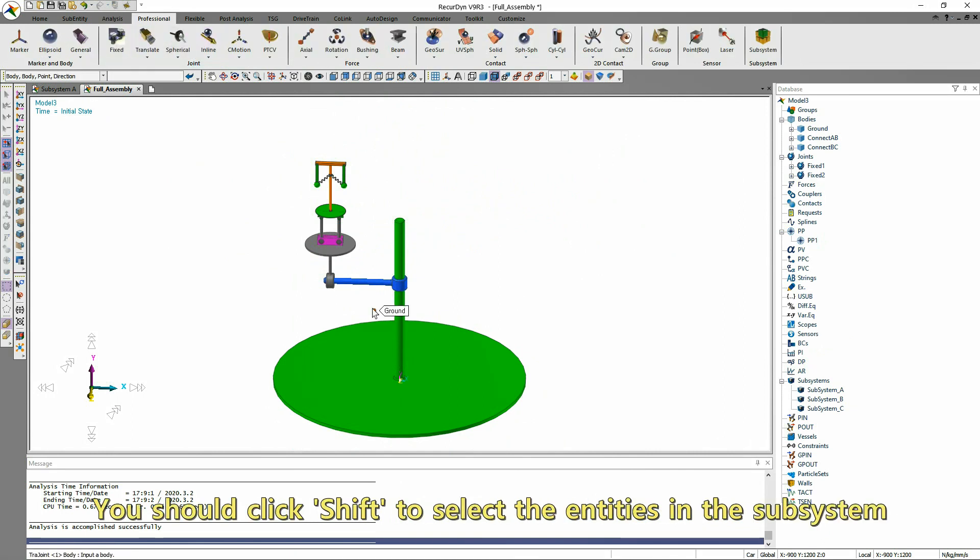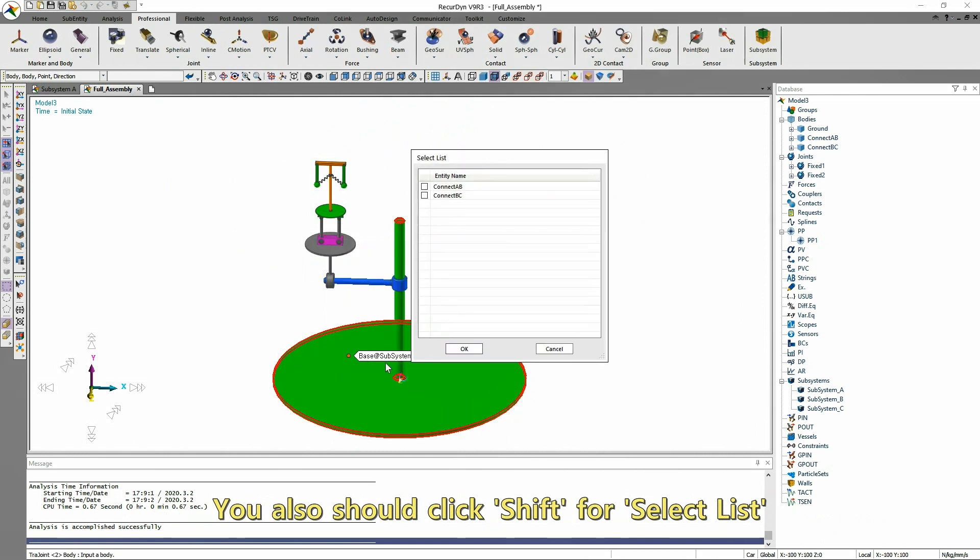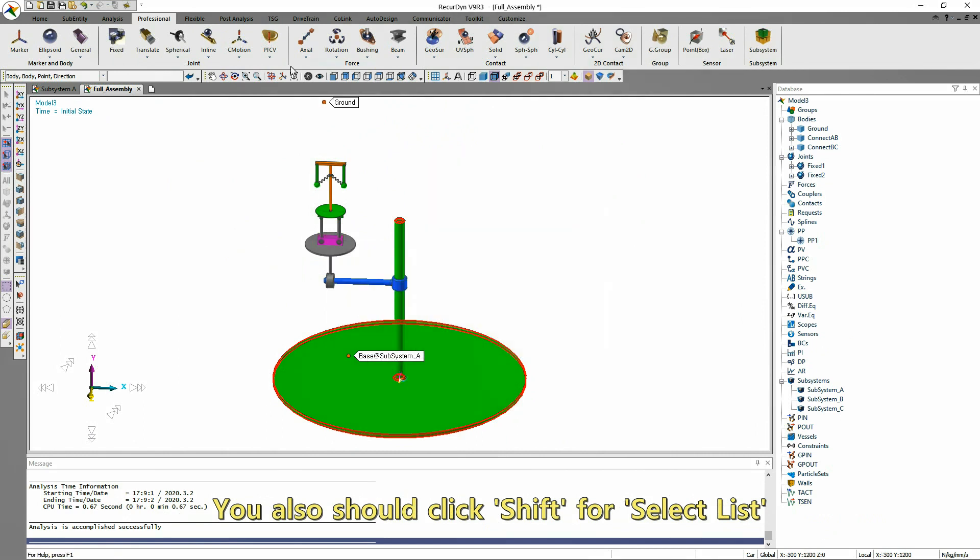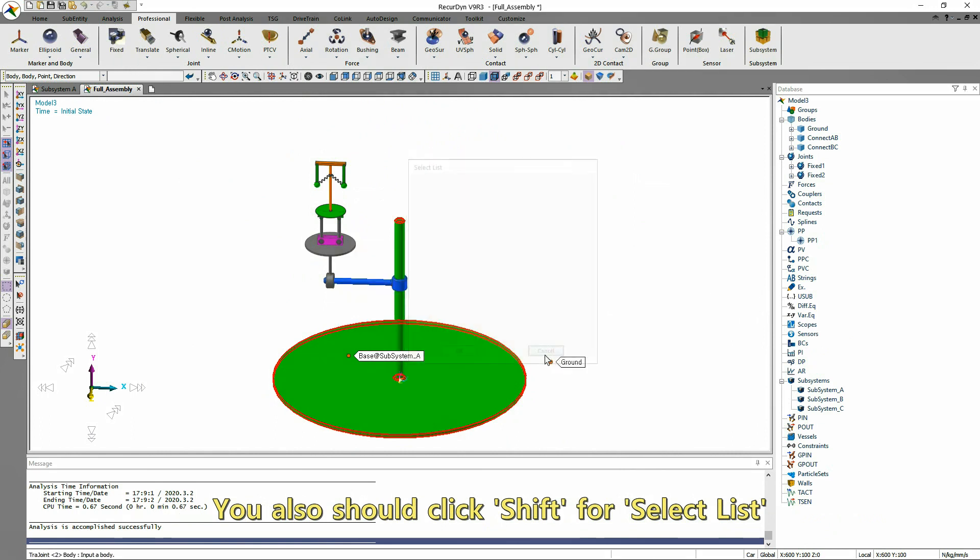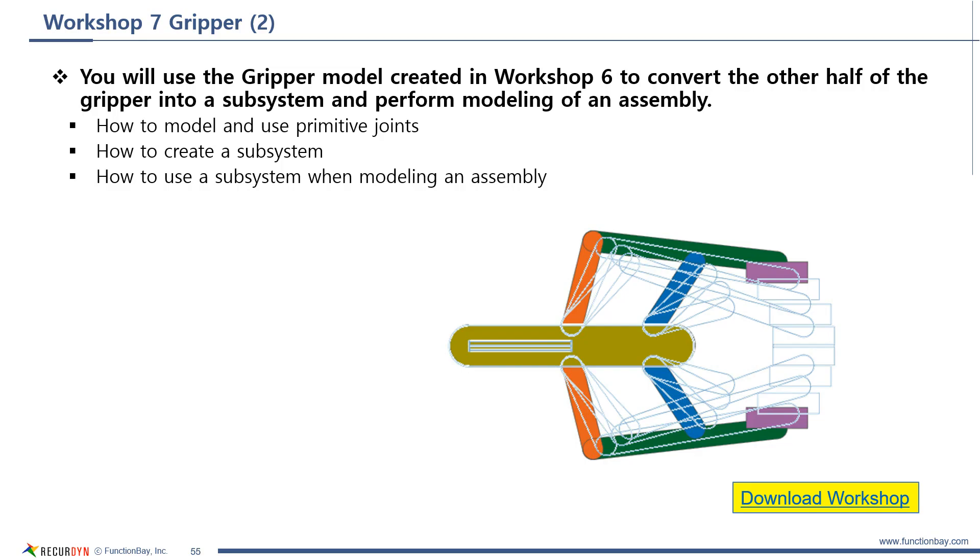You should click Shift to select the entities in the subsystem. You can use primitive joints and subsystem in this workshop.